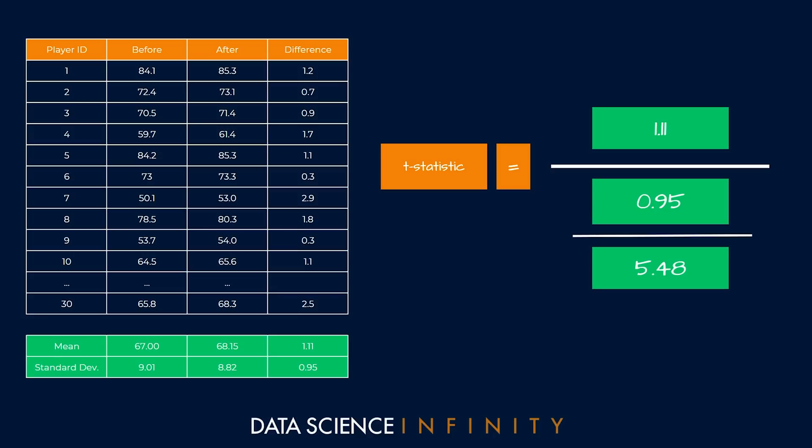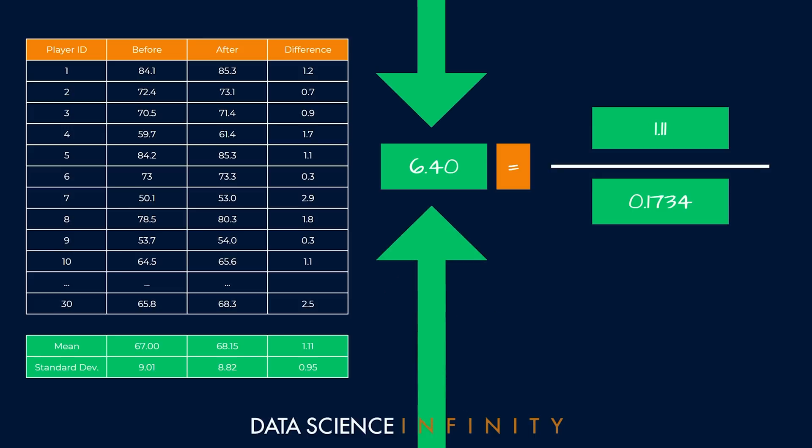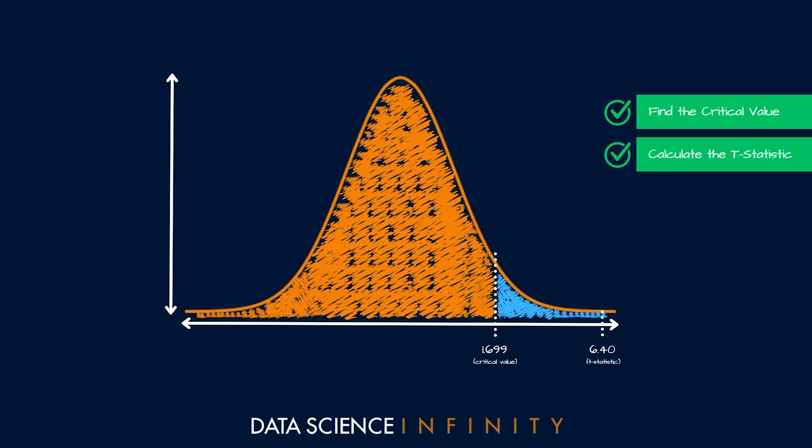Let's calculate the bottom part of the equation, so 0.95 over 5.48 is equal to 0.1734, and with that we have everything we need. If we calculate 1.11 over 0.1734 we will get our t statistic, and this gives a value of 6.40. If we head back to our distribution we can see that this t statistic value of 6.40 would fall here at a point outside our critical value of 1.699 and lands us firmly within this 5% area.